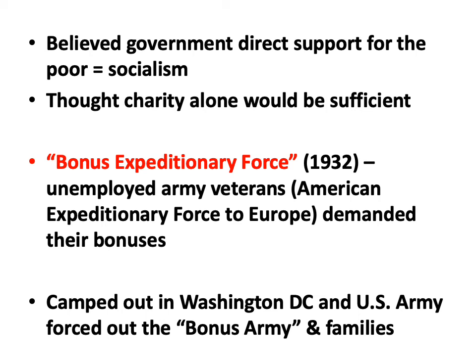Hoover lost much of his support in early 1932, before the presidential election, when a large group of unemployed army veterans — who had gone to Europe in World War I as part of the American Expeditionary Force — went to Washington D.C. and camped out, demanding their bonuses. These bonuses had been promised for the late 1930s, about 20 years after they came back from World War I. But people said they couldn't wait another six or seven years for their bonus — they wanted it now — and they demonstrated peacefully.